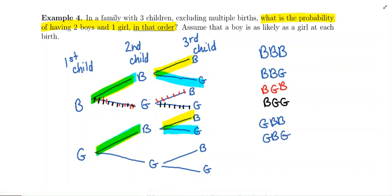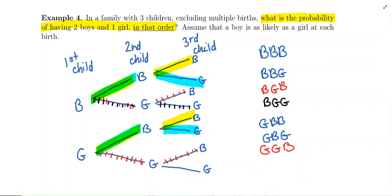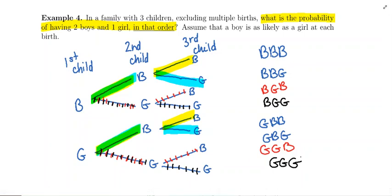Following the other paths: girl, girl, boy. And lastly, girl, girl, girl — so all girls. These are all the possible outcomes for three children, noting the birth order.